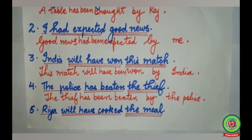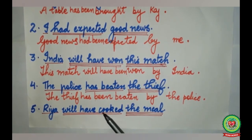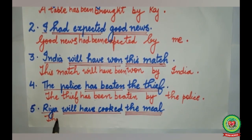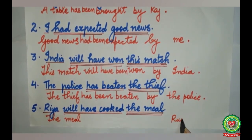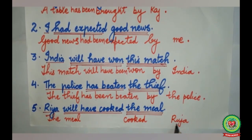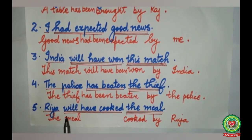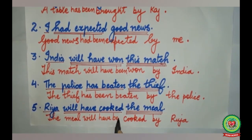Last sentence: Ria will have cooked the meal. Ria is the subject, will have cooked is the action word, the meal is the object. The meal will come in the beginning, Ria will go to the last. Cooked will remain cooked. Before Ria we add by. Will have changes to will have been. The sentence becomes: The meal will have been cooked by Ria.